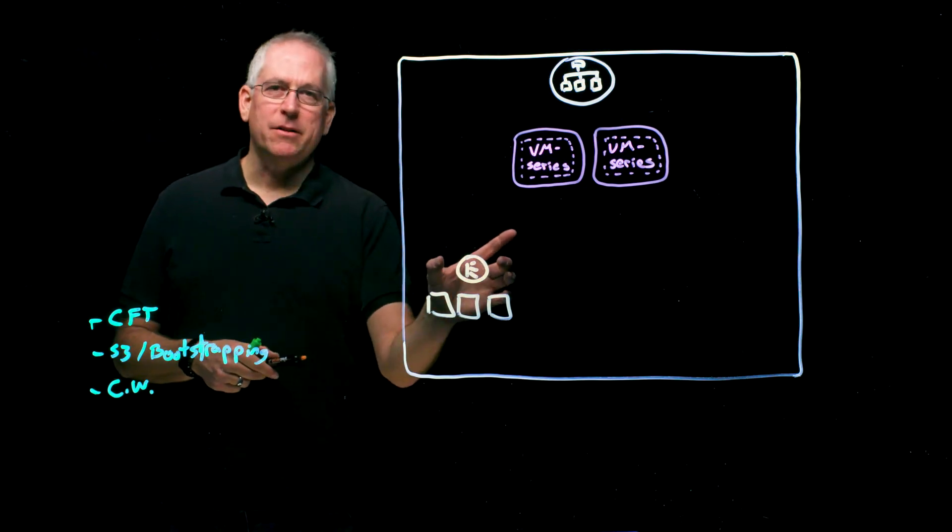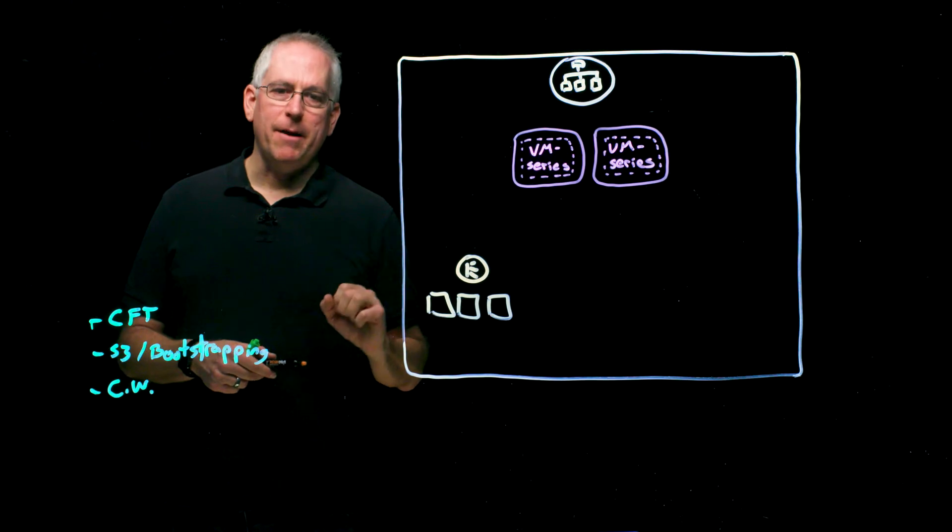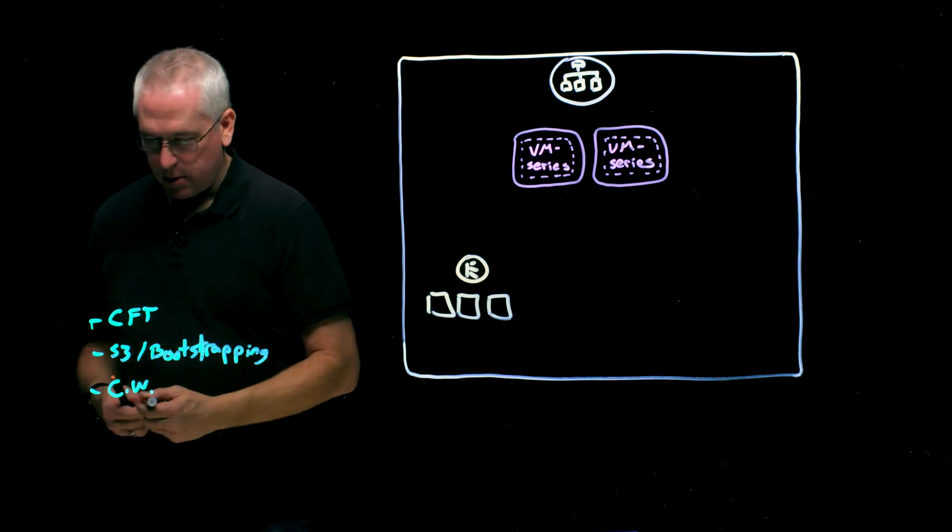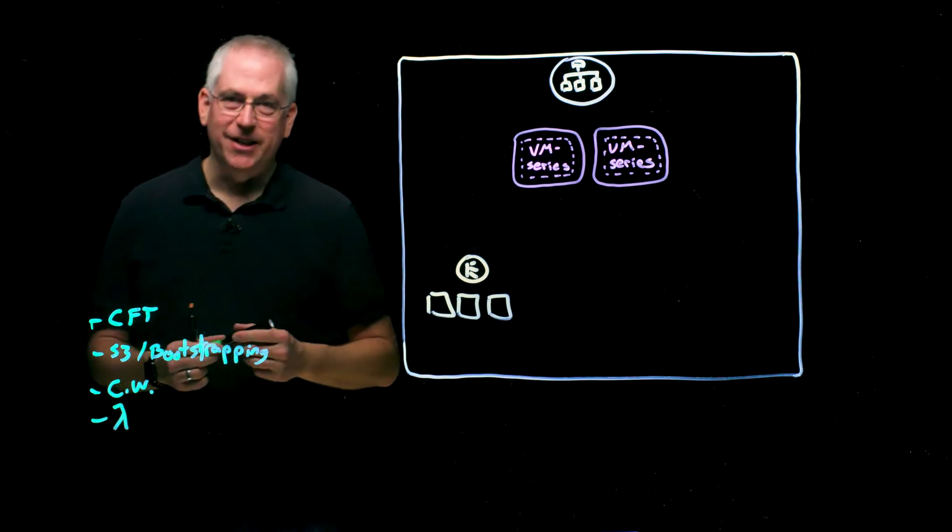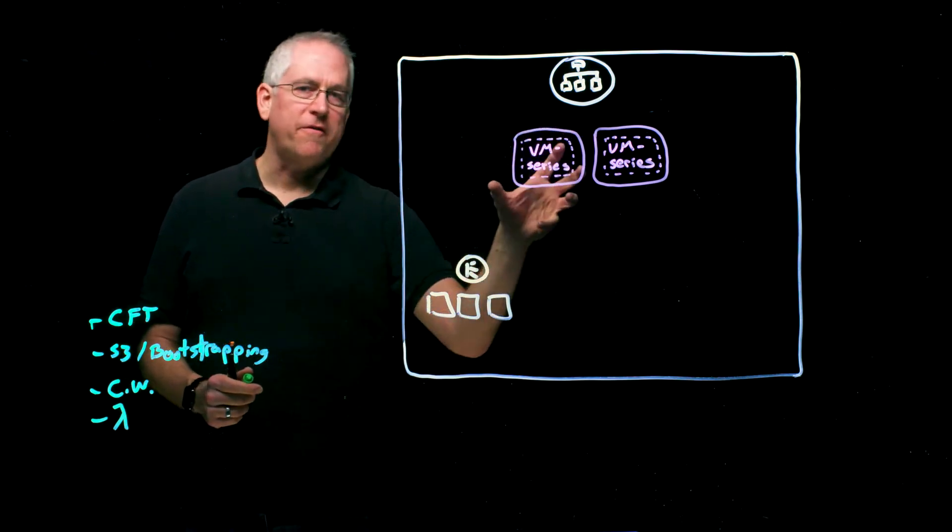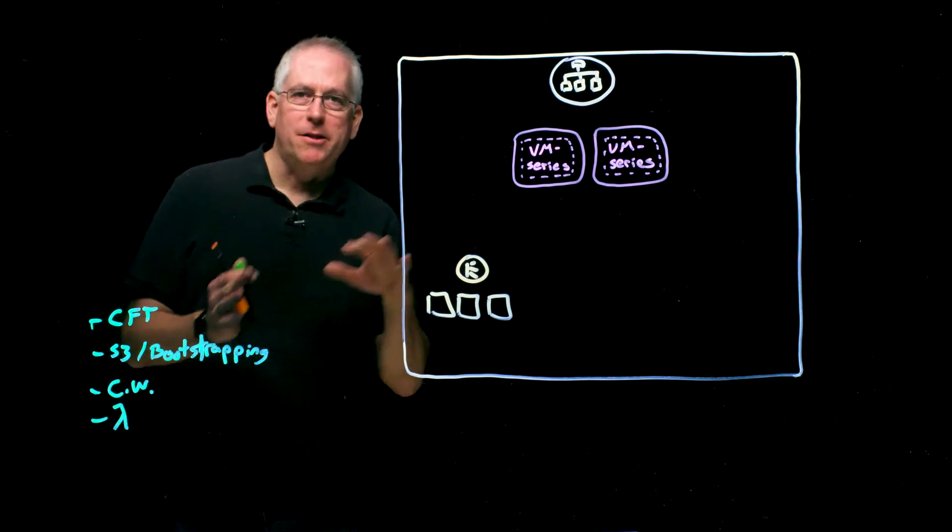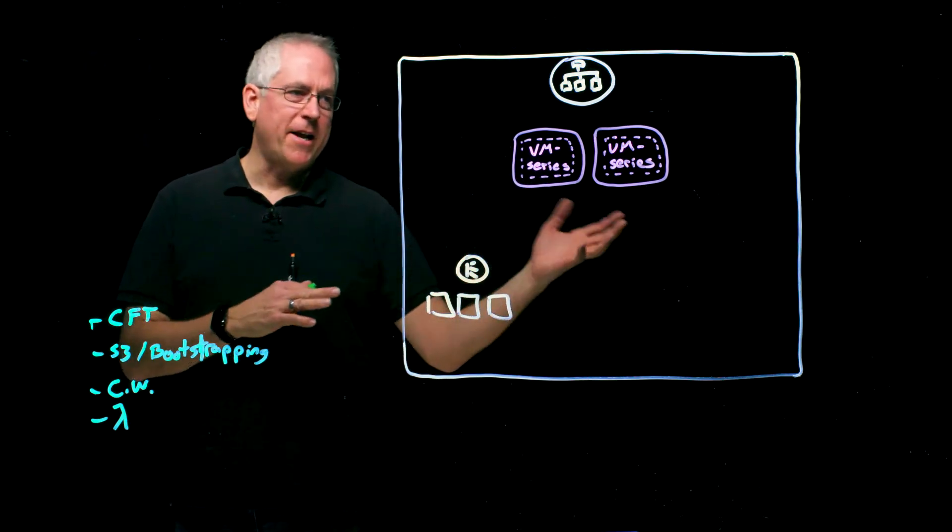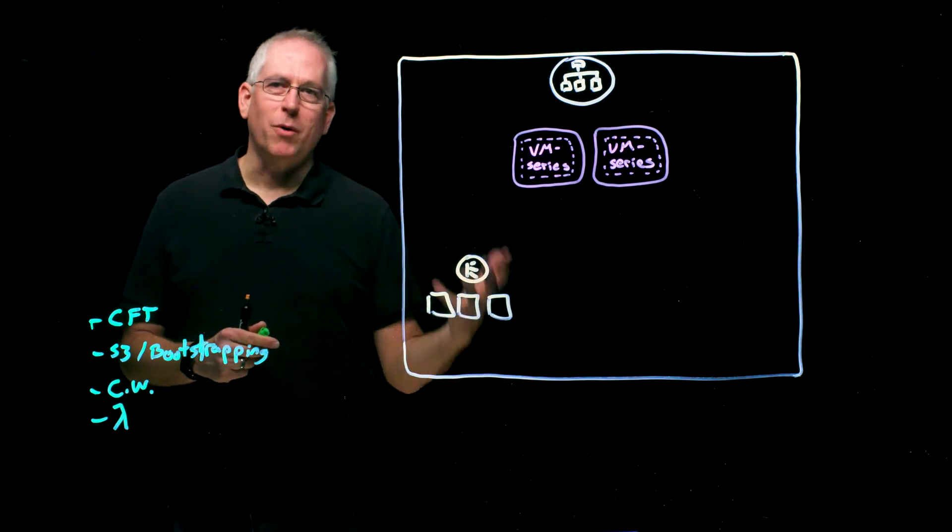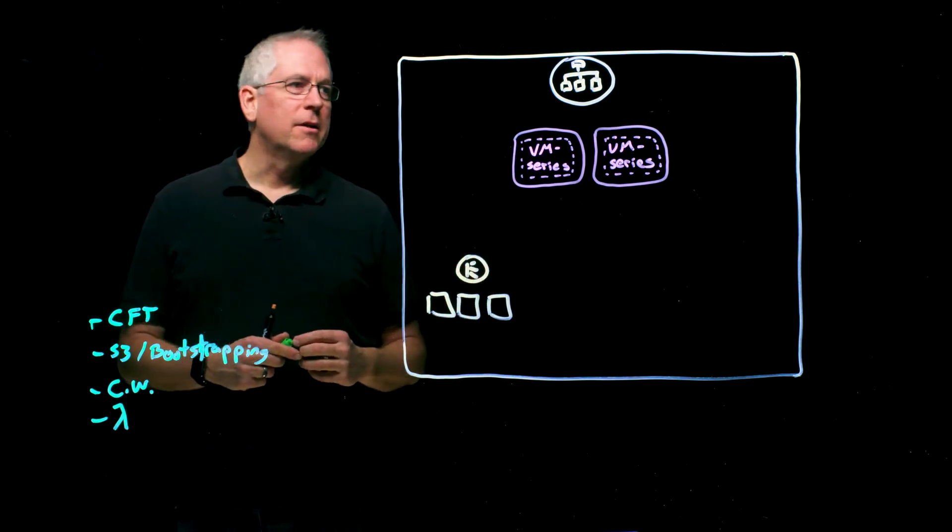When that tag is correctly configured at the time that's deployed, we have a Lambda function that detects that event and will automatically configure the rules on the firewall to send the traffic to the new application. The policy can still be managed via Panorama or on the firewall, but the routing will happen automatically for you using this solution.